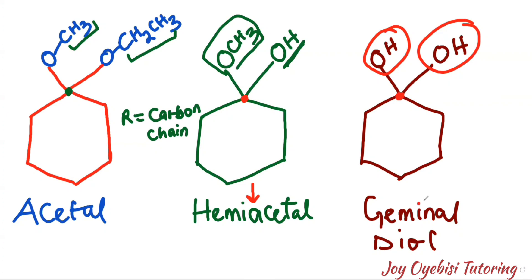So this is the major difference: if you have two OR groups attached to the same carbon it's called an acetal; if you have one OR group and one OH group attached to the same carbon it's called a hemiacetal; and if you have two OH groups attached to the same carbon it's called a geminal diol. Thank you for watching, don't forget to subscribe to my channel, and see you in my next video, bye.